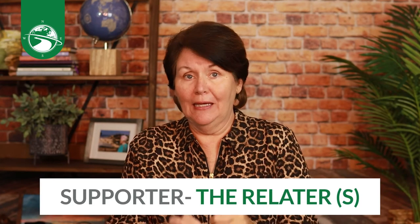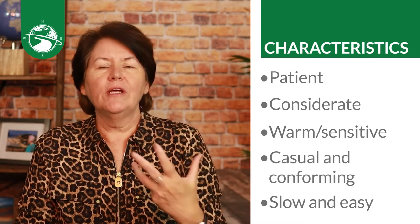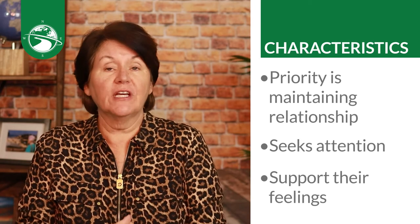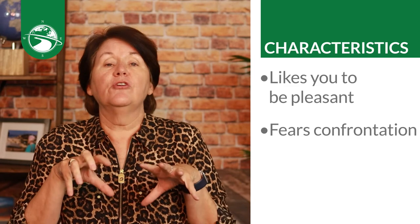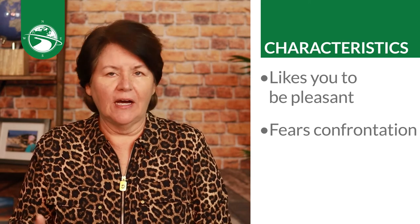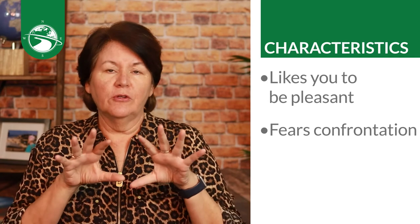Let's move on to the supporter, the relator, the high S. Characteristics include agreeable, likable, friendly, great listeners, cooperative, loyal, patient, considerate, warm, and sensitive — true supporters. Appearance is usually more casual and conforming, with a slower and easygoing pace. The priority is maintaining relationships. They seek attention and need you to support their feelings, as they get their feelings hurt more easily. They fear confrontation. If you're a high D working with a supporter, you'll tend to come across as overbearing — and that's exactly why understanding these personality styles matters. You need to conform so the person feels heard and you don't come across as pushy.